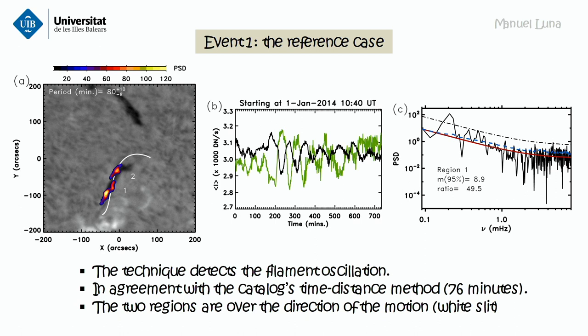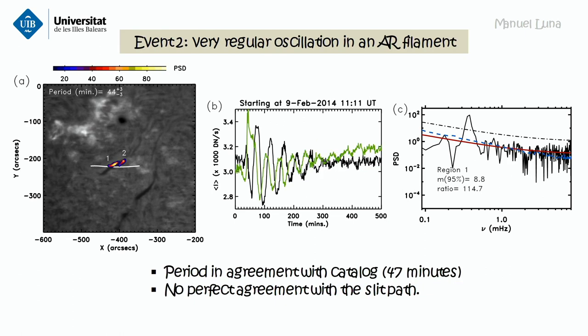We show the mean intensity in region one and two. The largest PSD in the single pixel shows a very strong peak — the peak has almost 50 times the noise level. This is another event where we can also see very clearly the oscillation with a strong power emission, and the intensity fluctuation. The ratio is more than 100 times the background noise. It's very powerful, and it's in agreement with the catalog.